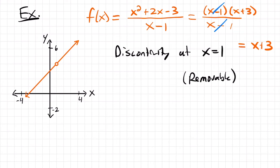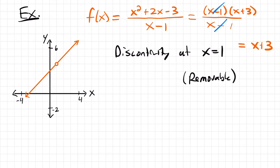Notice that the redefined function x + 3 would be the same line shown on the graph, but without the hole — that's how to visualize why the discontinuity is removable. If you also want to use the limit approach, you'd check the limit as x approaches 1 from the right and the left, and you'd see that both approach y equals 4. But even though the limit is 4 from both sides, the actual value at x equals 1 is undefined, so those wouldn't be equal — which further proves we have a discontinuity there.